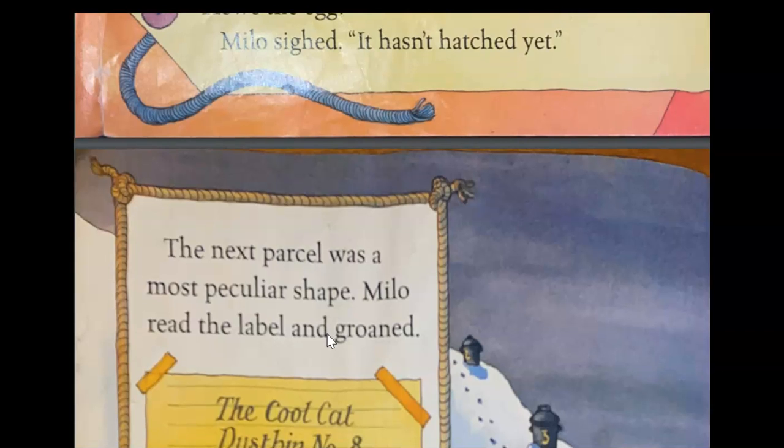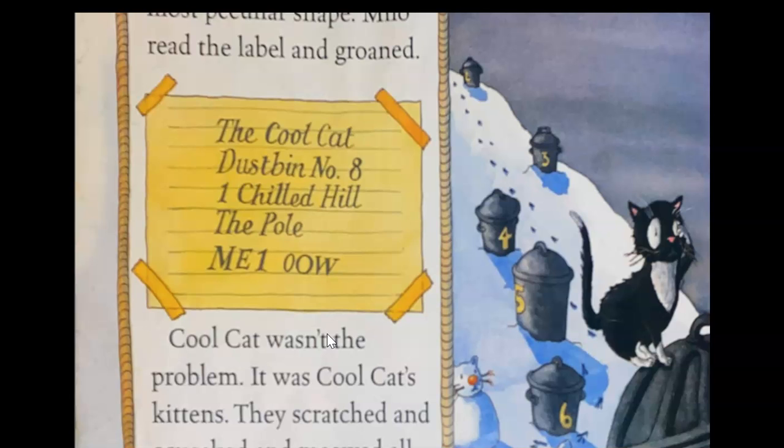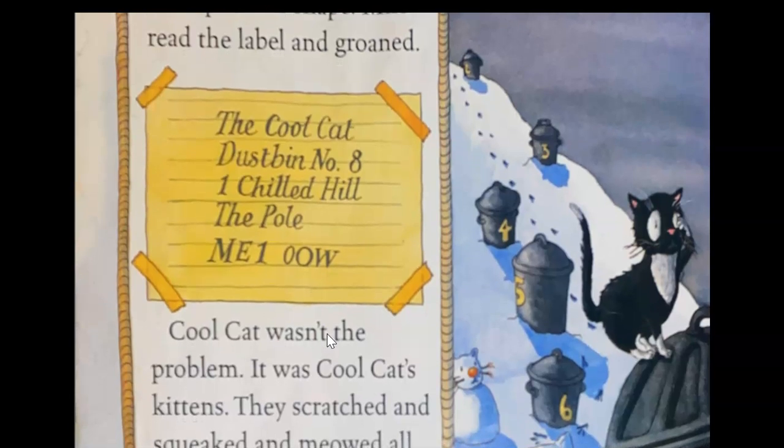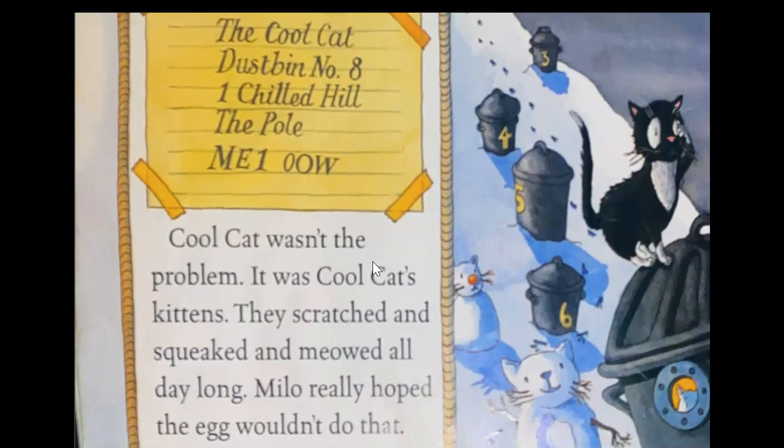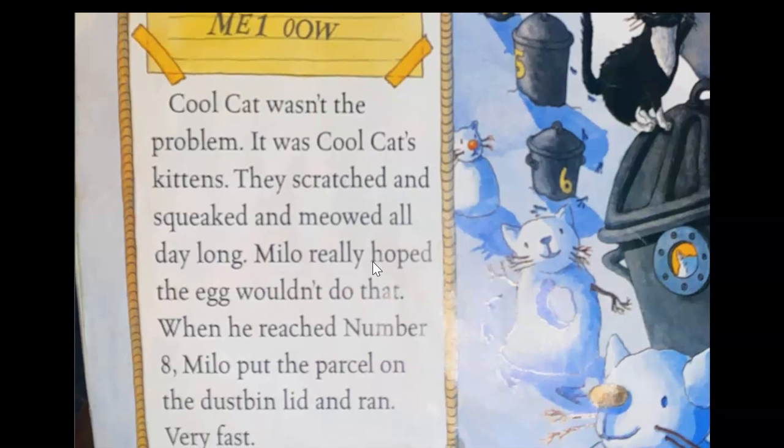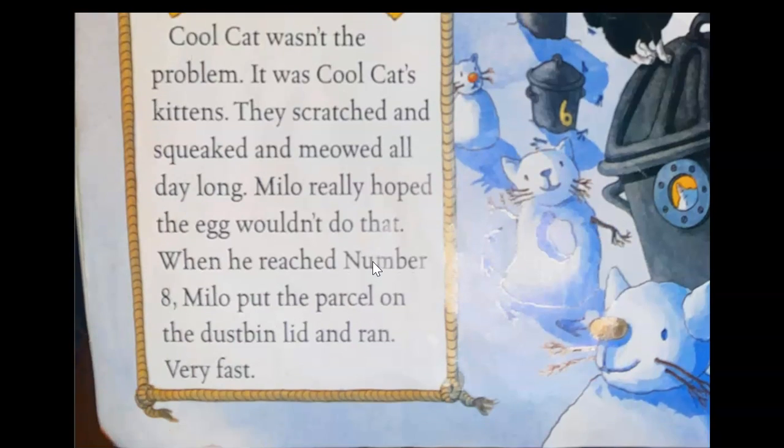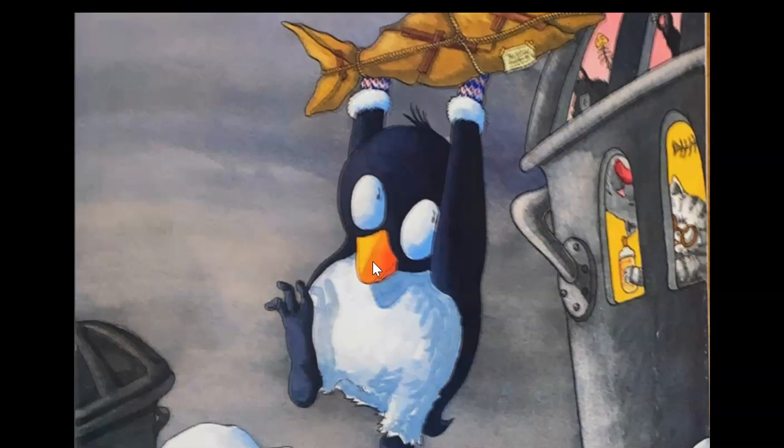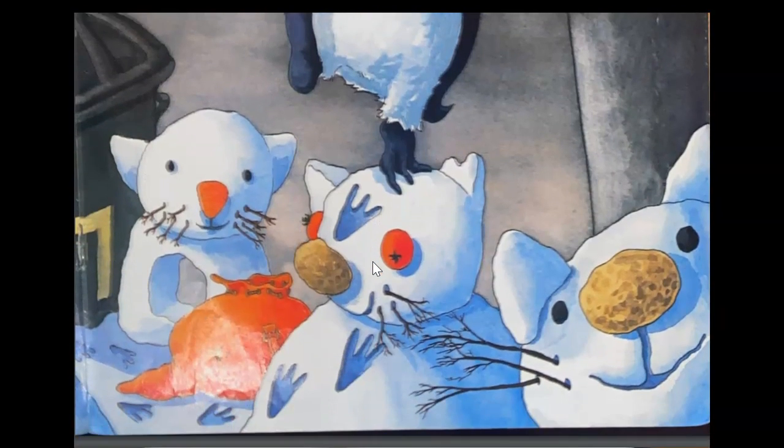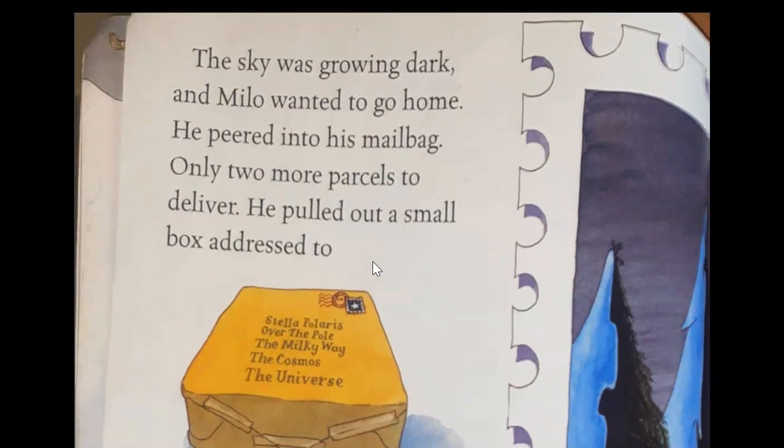The next parcel was the most peculiar shape. Milo read the label and groaned: The Cool Cat, Dustbin Number 8, One Chilled Hill at the Pool, ME-1-OOW, and it looks like meow. Cool Cat wasn't the problem, it was Cool Cat's kittens. They scratched and squeaked and meowed all day long. Milo really hoped the egg wouldn't do that. When he reached number 8, Milo put the parcel on the dustbin lid and ran very fast.